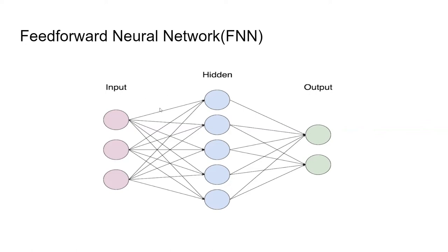For example, if the model takes in a 9x9 pixel picture and needs to determine what number is on the picture, the input layer will have 81 neurons — each takes in one pixel value from the 9x9 grid. The output layer will have 10 neurons representing digits from zero to nine.